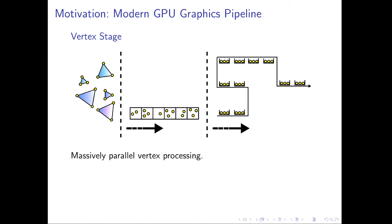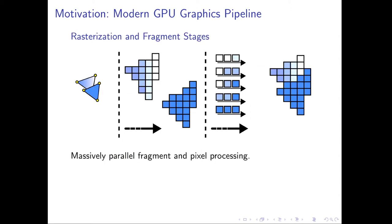After each vertex is processed in what we call the vertex stage of the graphics pipeline, they are turned into something called a fragment. A fragment is essentially a pixel, but not a pixel yet — we don't know if it will actually manifest as a pixel, or if it will later be occluded by other fragments, or if its color contribution will be mixed with other fragments. It is like a pre-stage of a pixel. At this stage, we have many fragments processed in parallel, and they are finally turned into pixels.